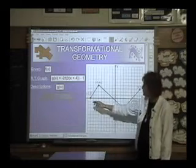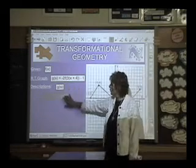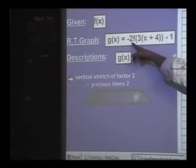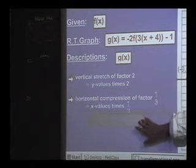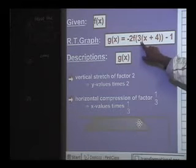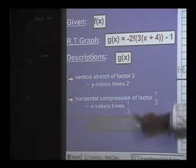Transformations have to be graphed in a particular order. We'll start with our stretches and compressions first. We have a vertical stretch of factor 2. Take our y values, multiply them by 2. A horizontal compression, a factor of third. Our x values times a third.